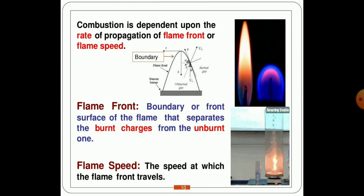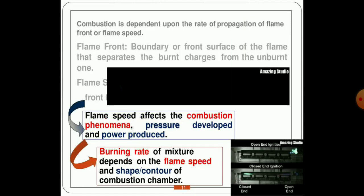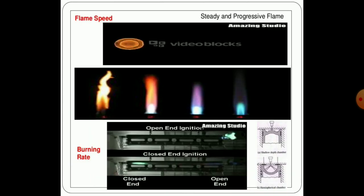The flame front is the boundary or front surface of the flame that separates the burned charges from the unburned ones. The flame speed is the speed at which the flame front travels. The flame speed affects the combustion phenomena, pressure, and power produced. The burning rate of the mixture depends upon the flame speed, as do the flame shape and contour of the combustion chamber.